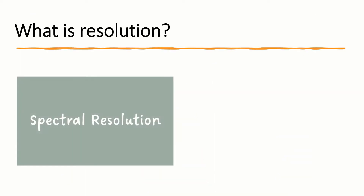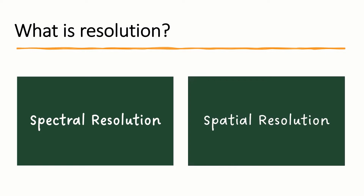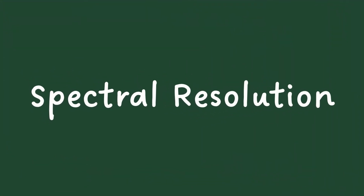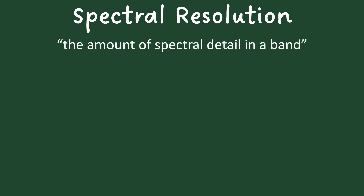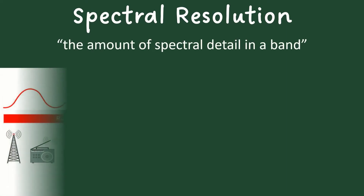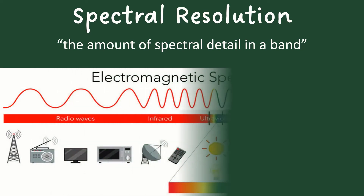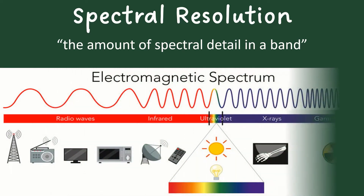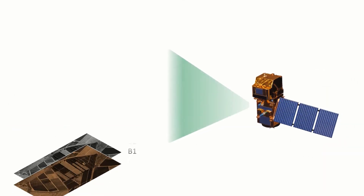Resolution refers to either spectral resolution or spatial resolution. Spectral resolution refers to the amount of spectral detail in a band — in other words, how many wavelengths on the electromagnetic spectrum are detected by a sensor. Multispectral images, for instance those from Sentinel-2, consist of 13 image layers.